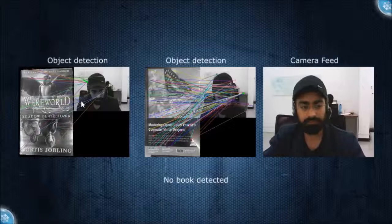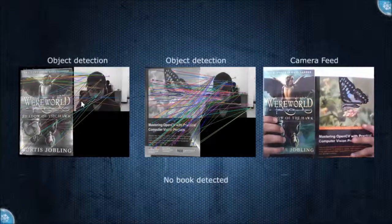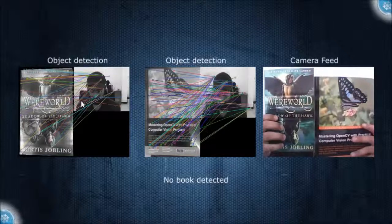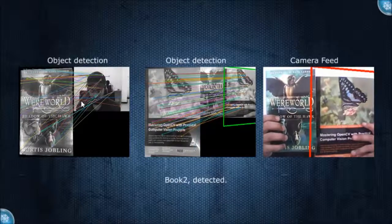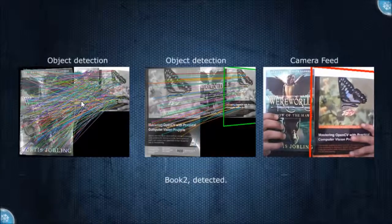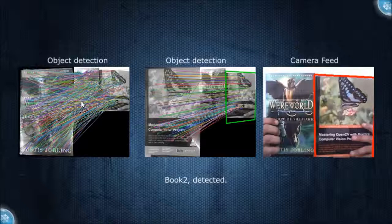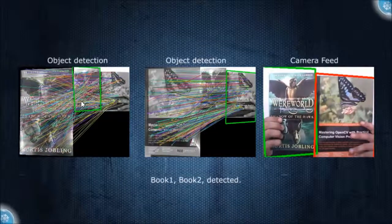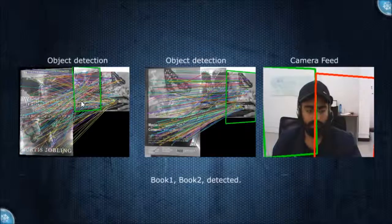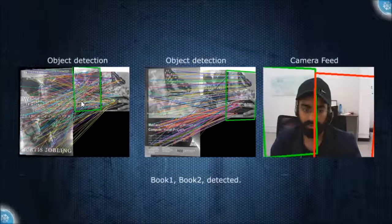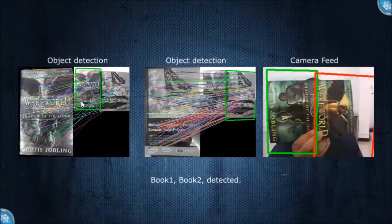I will show you a quick demo of it. Now, in this frame, both the objects are detected. Basically, the algorithm works in a way that it's rotation invariant, so even if you rotate the object, it's still going to be detected.